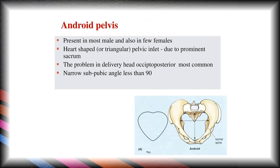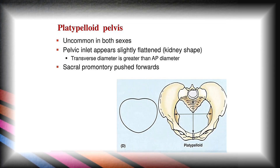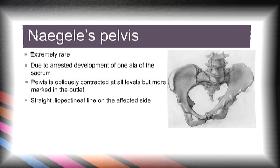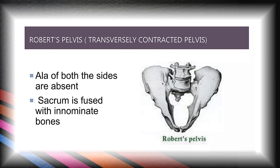In android pelvis, occiput posterior presentation is most common in delivery, and a narrow subpubic angle less than 90 degrees is present. In platypelloid pelvis, which is uncommon in both sexes, the pelvic inlet appears slightly flattened or kidney-shaped; the transverse diameter is greater than the anteroposterior diameter, and the sacral promontory is pushed forward. In Naegele's pelvis, which is extremely rare due to arrested development, one ala is missing; the pelvis is obliquely contracted at all levels with a straight iliopectineal line on the affected side. In Robert's pelvis, both alae are absent and the sacrum is fused with the innominate bones.